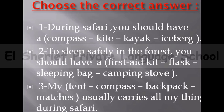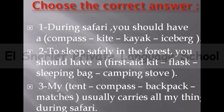Now let's answer these questions — choose the correct answer. Number one: during a safari, you should have a compass, kite, kayak, or iceberg? The answer will be: during a safari, you should have a compass. Number two: to sleep safely in the forest, you should have a first aid kit, flask, sleeping bag, or camping stove? The answer will be: a sleeping bag. Number three: my tent, compass, backpack, or matches usually carries all my things during safari? The answer will be: my backpack.